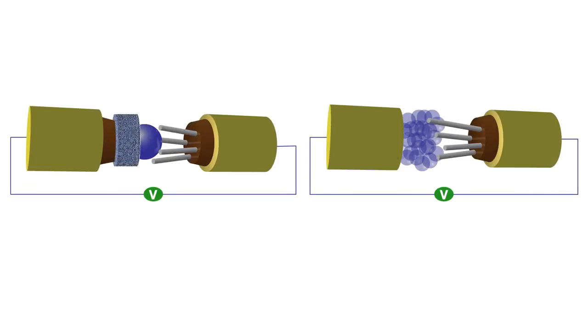The simplest design features a single nanowire as the working electrode, an ionic liquid or lithium oxide as the electrolyte, and a lithium-based metal oxide as the counter electrode.